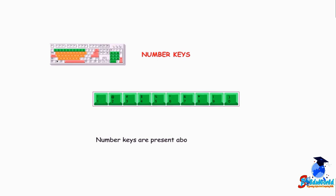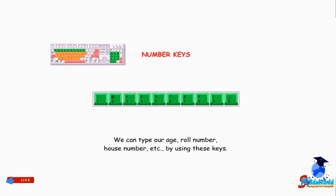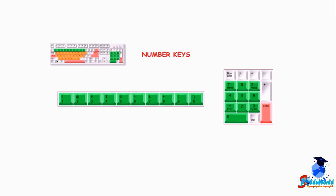Number keys are present above the alphabet keys and placed in order. We can type our age, roll number, house number, etc. using these keys. The number keys are also present on the right side of the keyboard — this is called the numeric keypad.